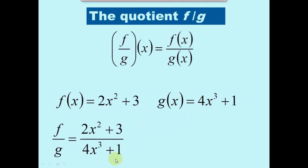The quotient of f over g: when we write f over g with respect to x, we just want to divide the f of x function by the g of x function. So it will simply be f of x divided by g of x. Make sure that if you have a radical in the denominator, you rationalize it appropriately — for example, if the denominator is a square root of 4x cubed plus 1, you multiply top and bottom by that square root.